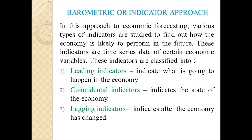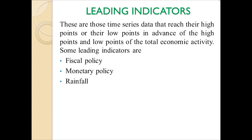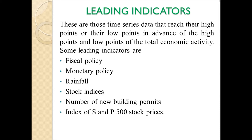We have mainly three types of indicators: leading indicators, coincidental indicators, and lagging indicators. Leading indicators are those time-series data that reach their high points or low points in advance of the high points and low points of total economic activity. Some leading indicators are: fiscal policy, monetary policy, rainfall, stock indices, number of new building permits, index of S&P 500 stock prices, and money supply.